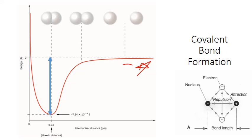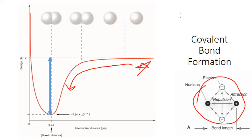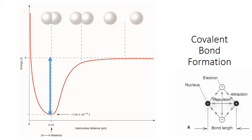As their valence orbitals overlap, that potential energy starts to drop. This is because the valence electrons are now close enough to attract the positively charged nucleus of the approaching atom. It's the strong attraction for the shared electrons to both nuclei in the bond that helps stabilize the system. Now if the atoms come too close together, the repulsions between those two positively charged nuclei become stronger and the potential energy increases again.